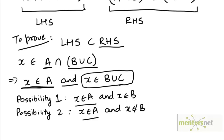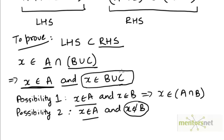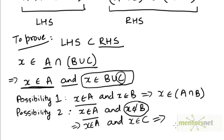If x belongs to B and x belongs to A, then x must belong to A intersection B. Now, what if x belongs to A and x does not belong to B? If x does not belong to B, then x must belong to C, because if x belongs to the union of B and C and x doesn't lie in B, it must be an element of C. So if x does not belong to B, it must be that x belongs to C, meaning x belongs to A and x belongs to C, so x belongs to the intersection of A and C.